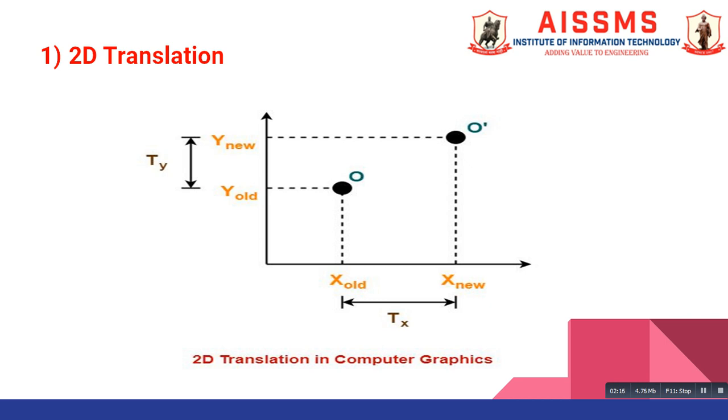Same thing can be graphically represented by this figure. Here X old is X coordinate of object O before translation. Here X new is X coordinate of object O after repositioning or we can say translation. TX represents the distance by which object has to be moved on X axis. And TY represents distance by which object has to be moved on Y axis.